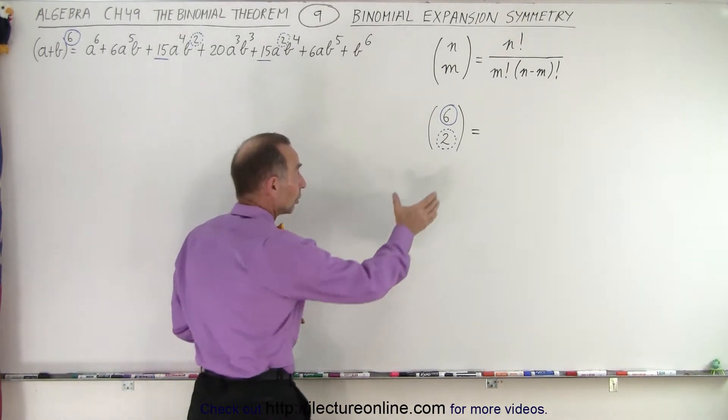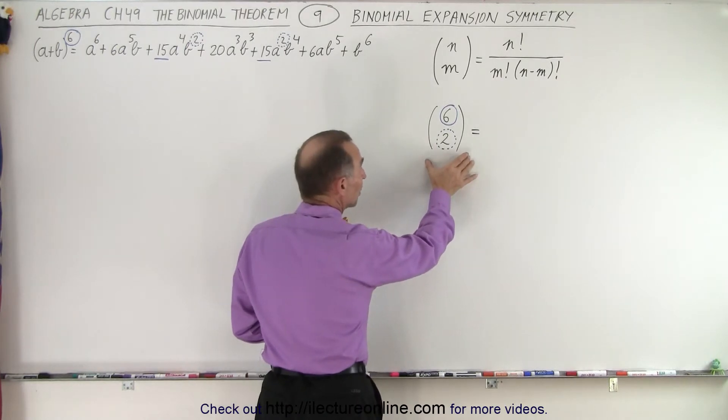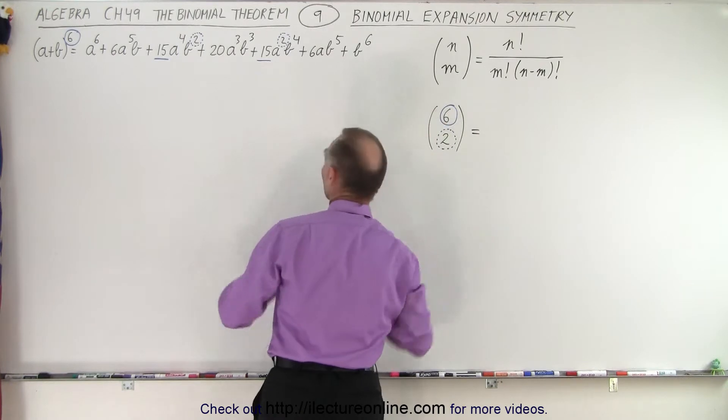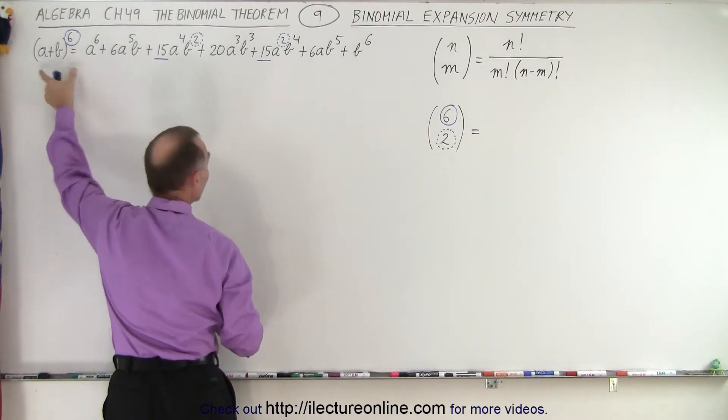When we took a look and see that we can actually find the numerical coefficients using this method, we realize that the top number here corresponds to the exponent of our binomial expansion.